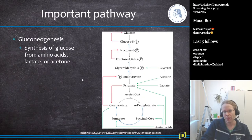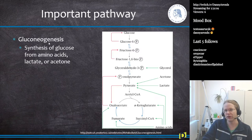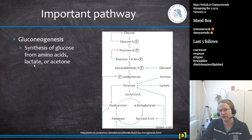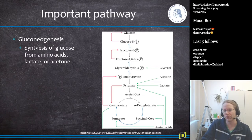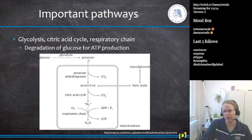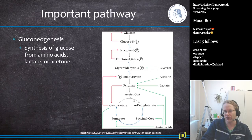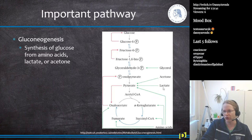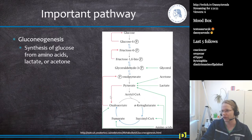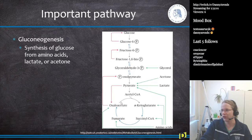Another important pathway is gluconeogenesis — the synthesis of glucose from amino acids, lactate, or acetone. We again see acetyl-CoA and pyruvate here. Amino acids can be transformed directly into pyruvate, and pyruvate can be produced from acetone or from lactate. Glycerol can also feed into the acetyl-CoA cycle for energy production. Gluconeogenesis is an important pathway for energy production as well.